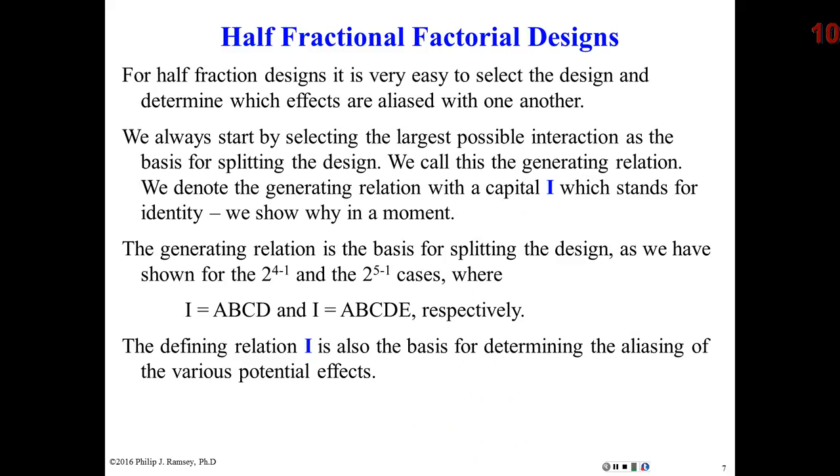So how do we set up these designs? Again, for a half fraction, it's very simple. You set the design up based upon the largest interaction. So for a two to the fifth minus one, we set up the design based upon the five way interaction. A, B, C, D, E equals one. By the way, the capital I is a convention we use and it stands for identity or plus one. So that's exactly what you do. So a two to the fifth is 32 runs. A half fraction is 16. I just picked the 16 runs where ABCD equals plus one.